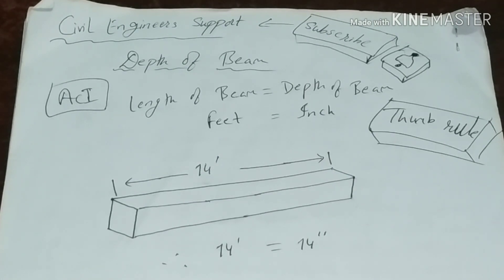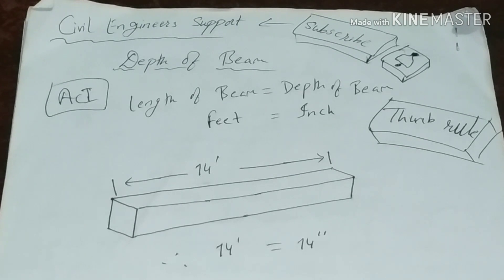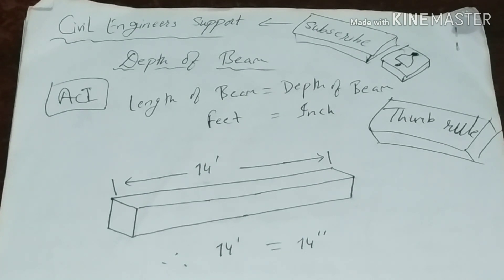The American Concrete Institute provides guidelines for beam design. The thumb rule for beam sizing relates the length of a beam to its depth. This thumb rule is not always accurate — it is a general guideline, not a precise design rule, but it can be applied as a starting point for determining beam depth.